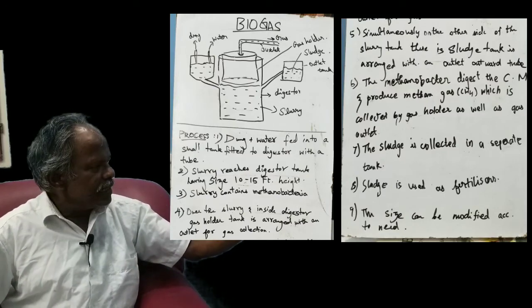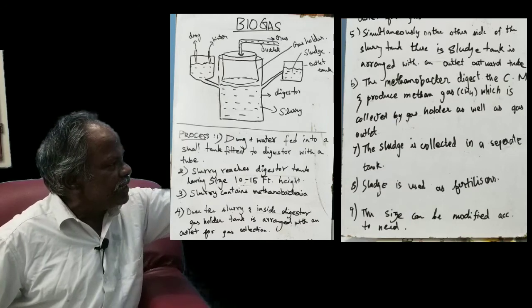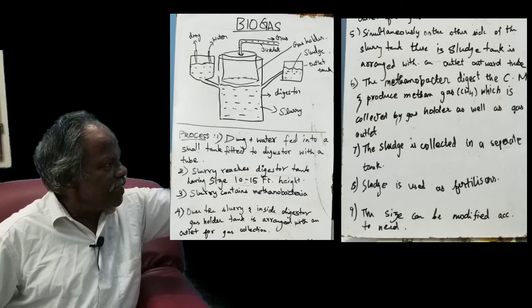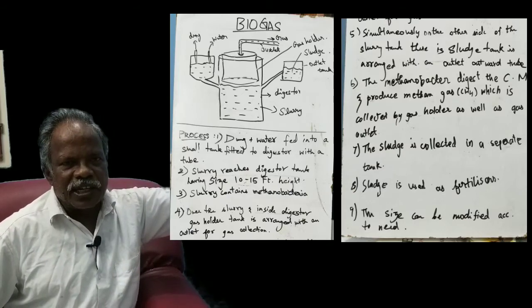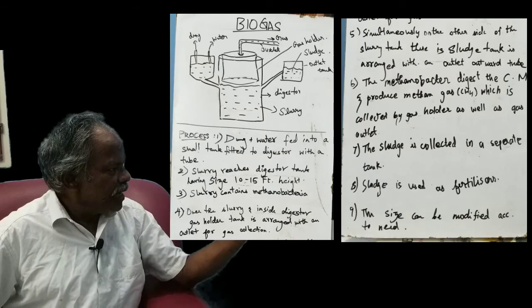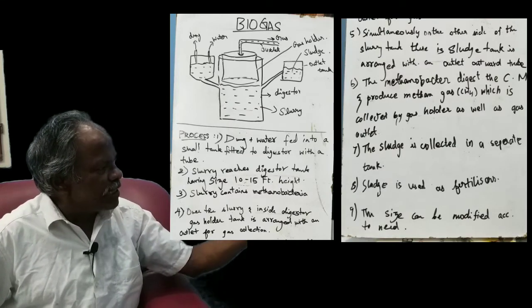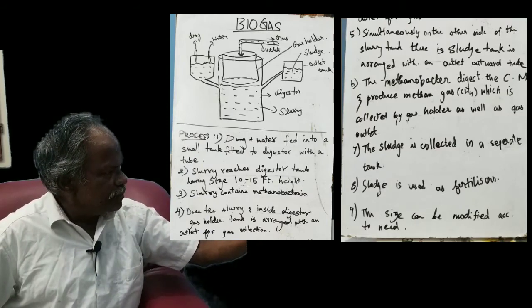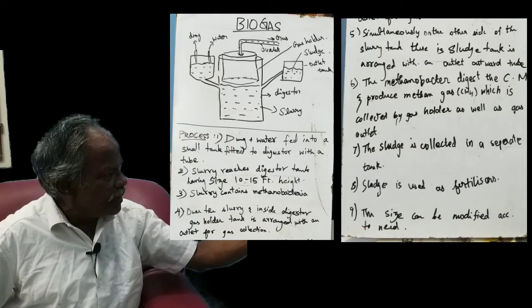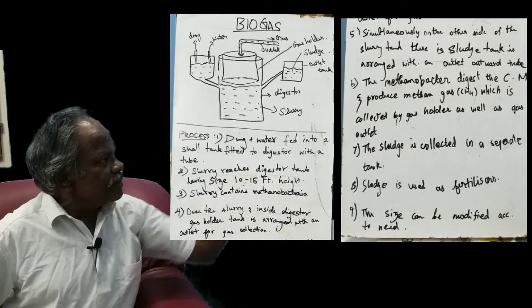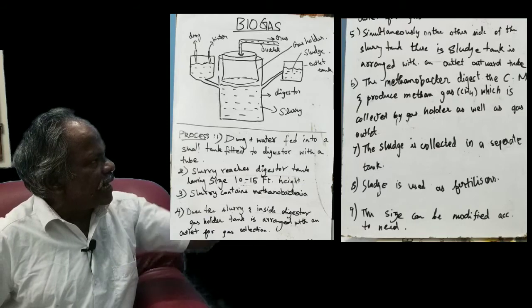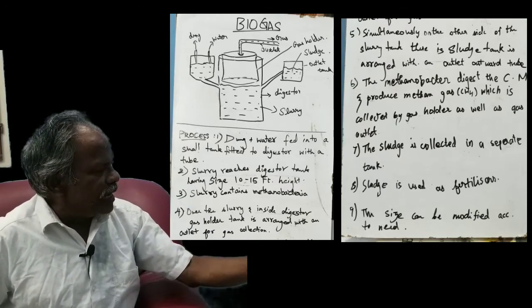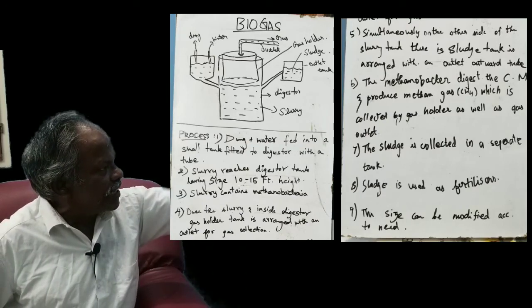The slurry contains methanobacteria. The methanobacteria produces methane from the cowdung slurry, that is cellulose-containing material. Over the slurry and inside the digester, a gas holder tank is arranged for gas collection. The methanobacteria present in the slurry digest the cellulose.